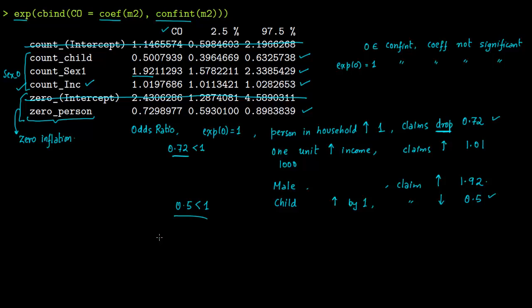The best way to explore the model further is to use the predict command in R, varying the number of children, sex, income level, and number of persons in the household to see how predicted claim counts change.